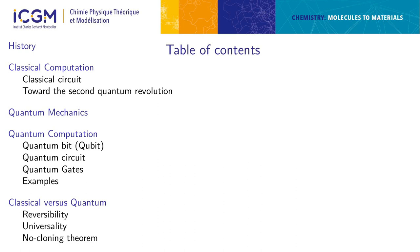I will start with the history, beginning from the early 19th century. Then we'll move to some knowledge about classical computation, simply to compare it with quantum computing. We'll see connections between the two, then move to the standard of quantum mechanics, because that explains the quantum computation tasks, and finally some comparisons between the two.